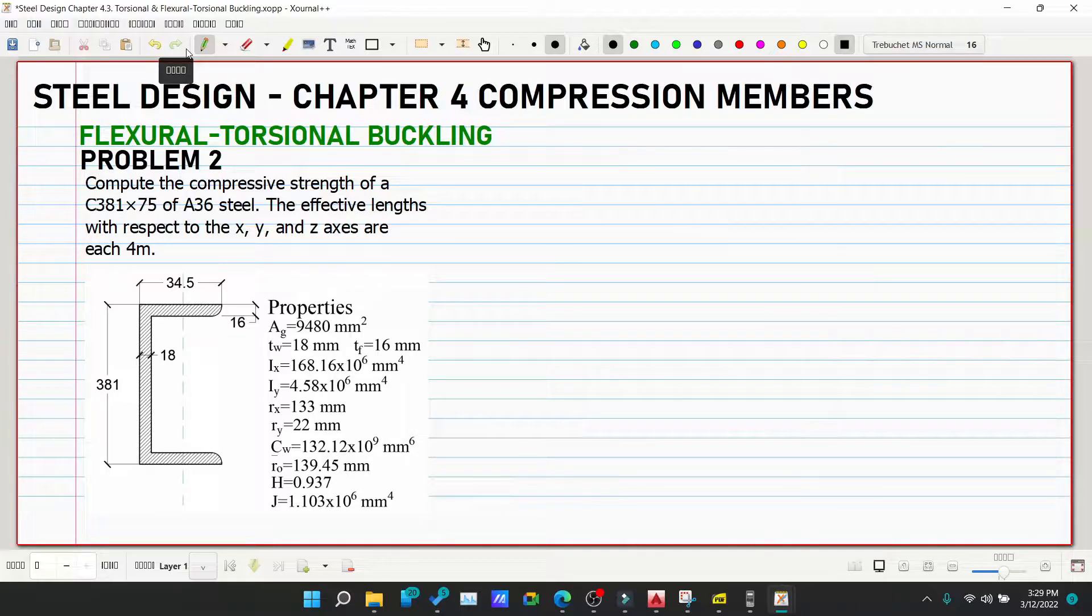So A36 steel ang given, so our Fy is equivalent to 248 megapascals. Okay, then let's check the properties.